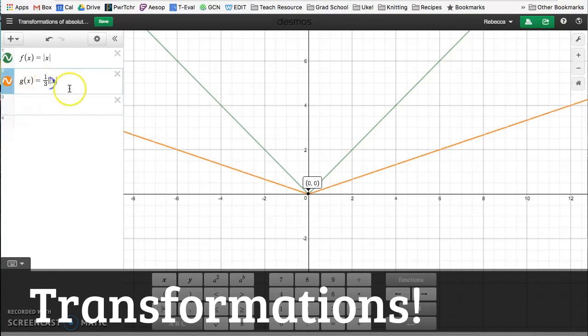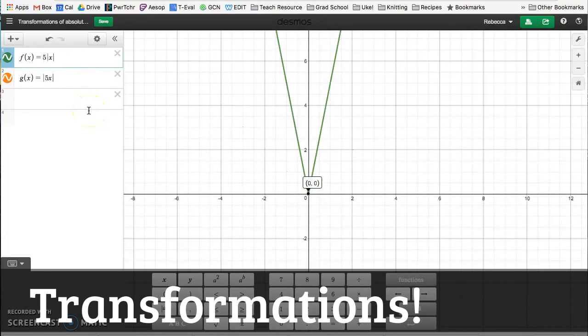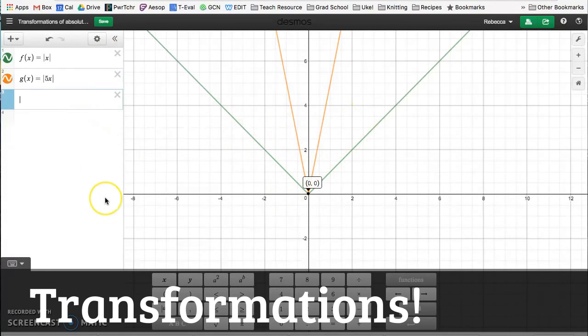So now you're probably thinking, what happens if I multiply on the inside? Well, it's kind of strange. So this is actually a horizontal compression. So all the x, it's not quite the same as if I did this. Oh, it is the same. I'm just kidding.